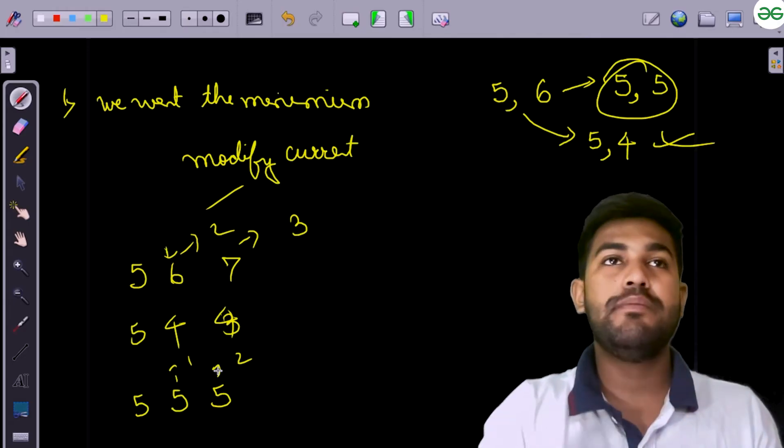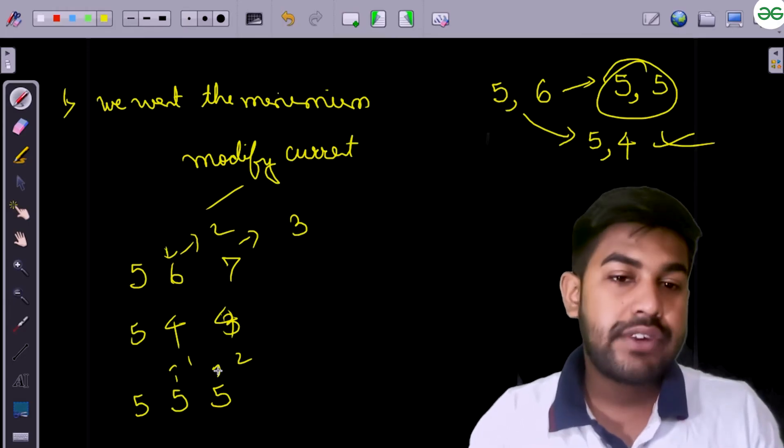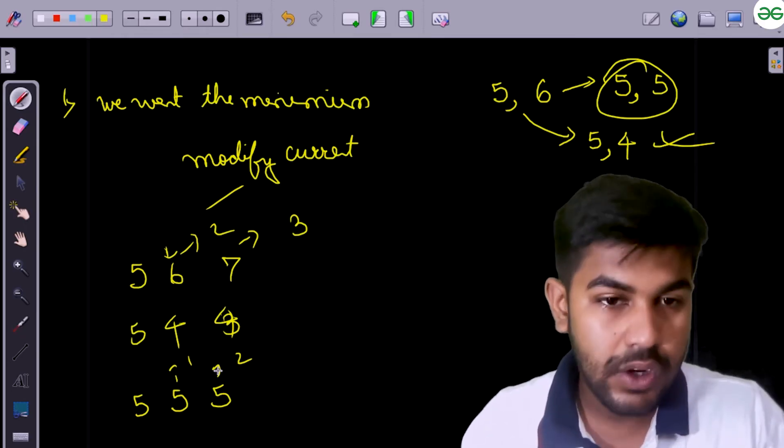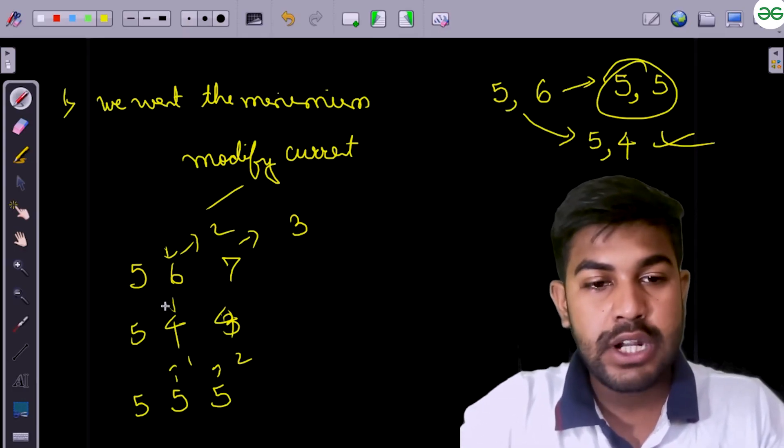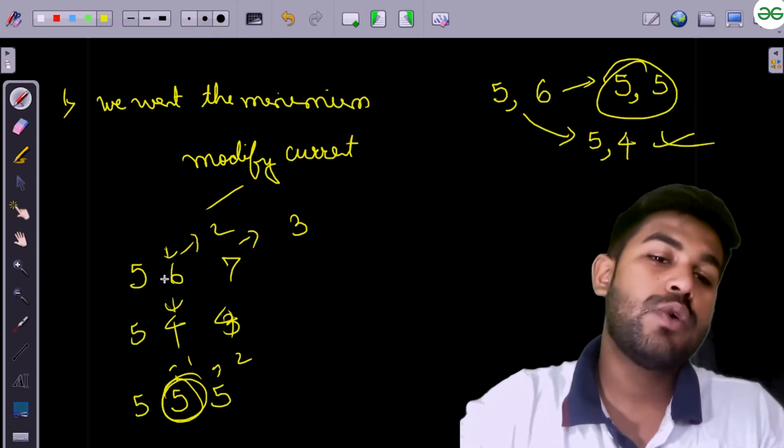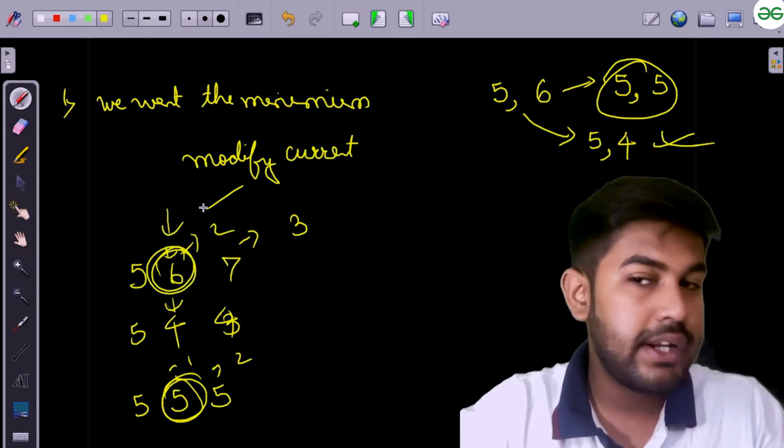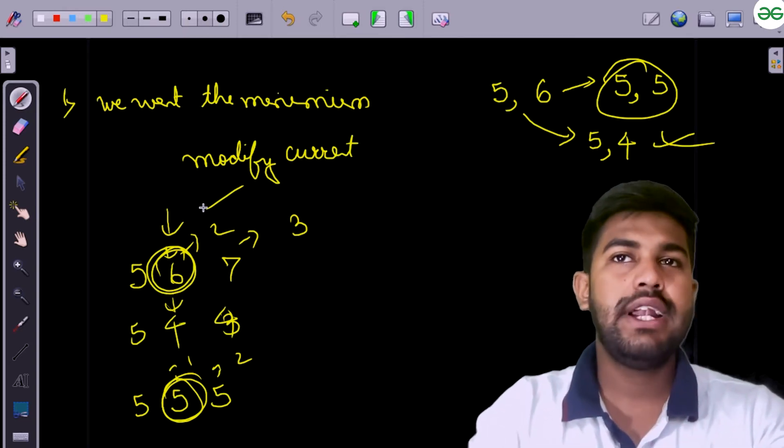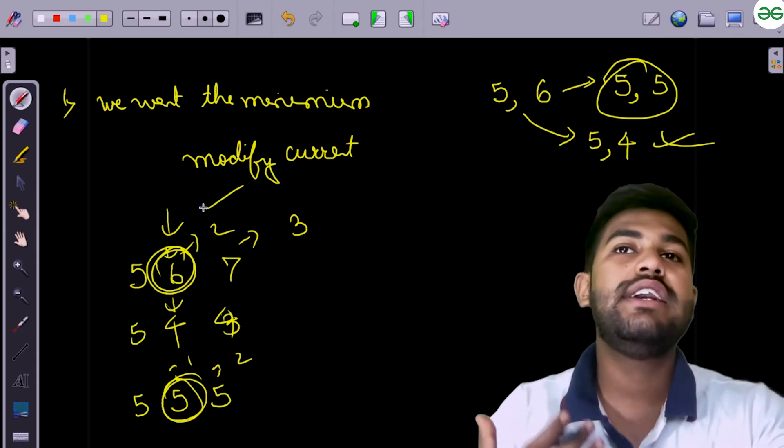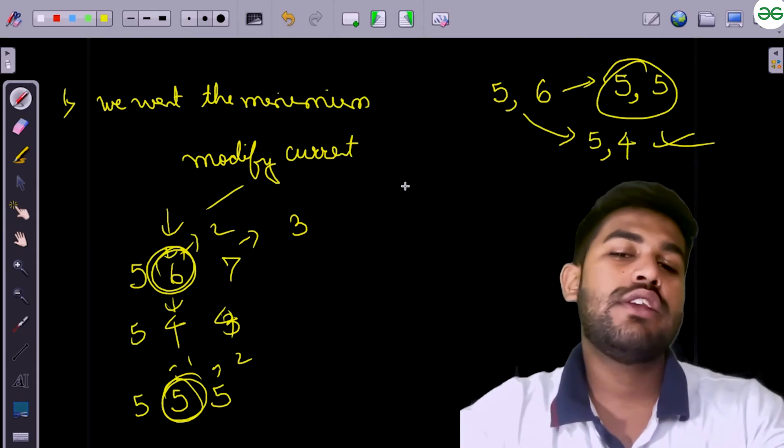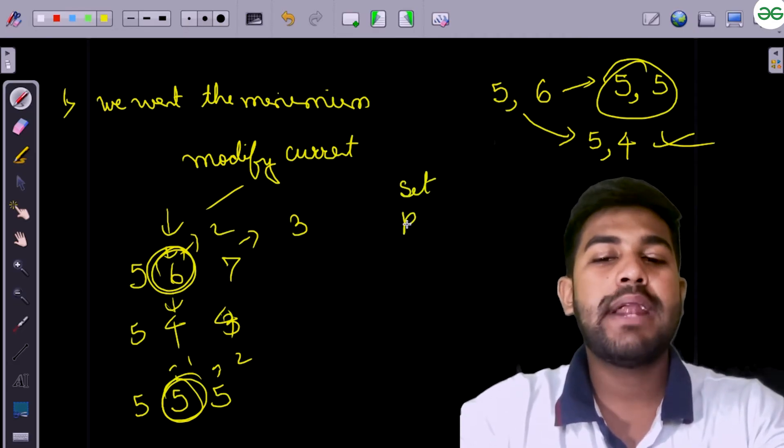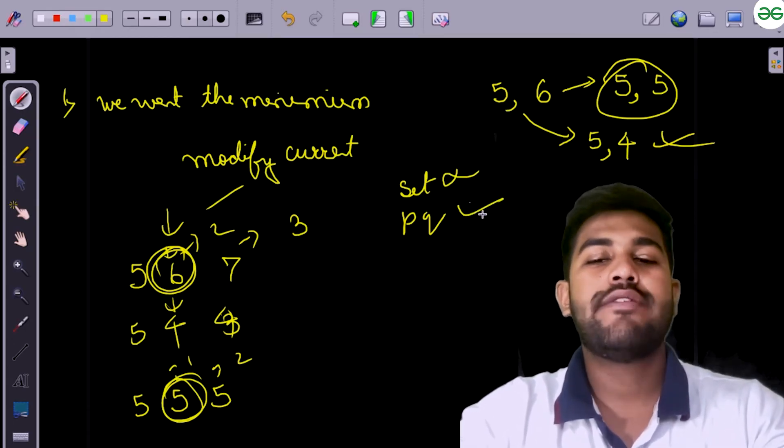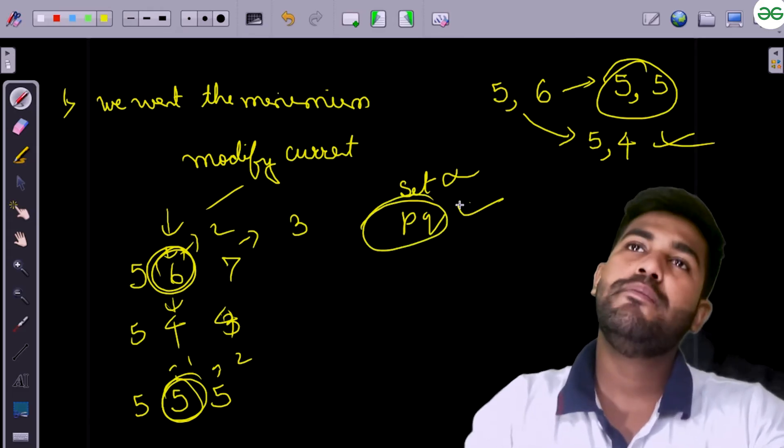So what we would do is, we would try to find out the minimum occurred till this point and after that, if we are modifying that element, that means it might be required for some future. Because after this modification, this element is required. So we might require this element also. So to do this, to find out the minimum occurred till that point and the minimum is changing. So basically we want dynamic minimum at each point. So the first thing that pops in our head is set or priority queue.